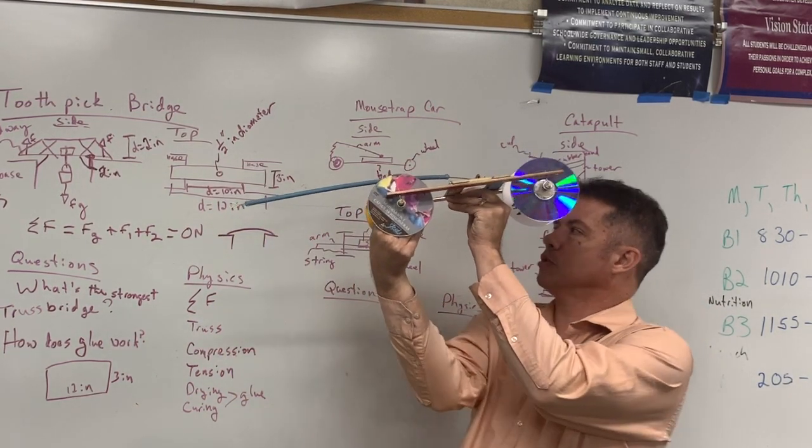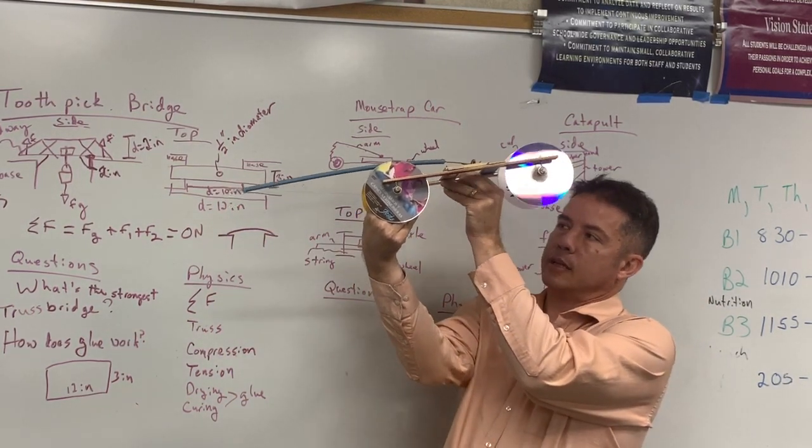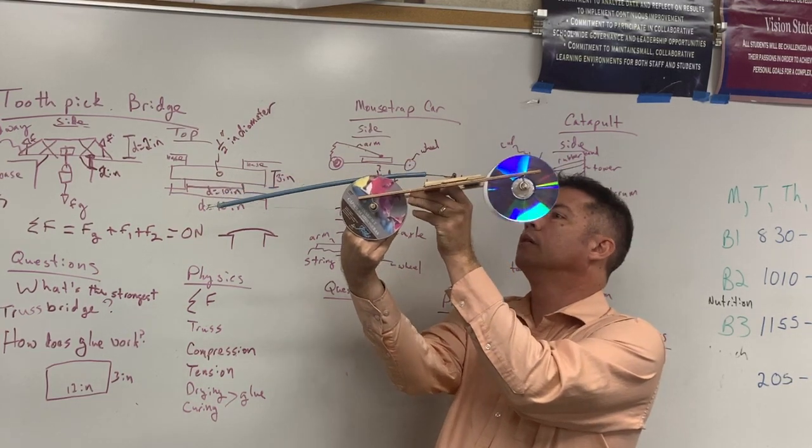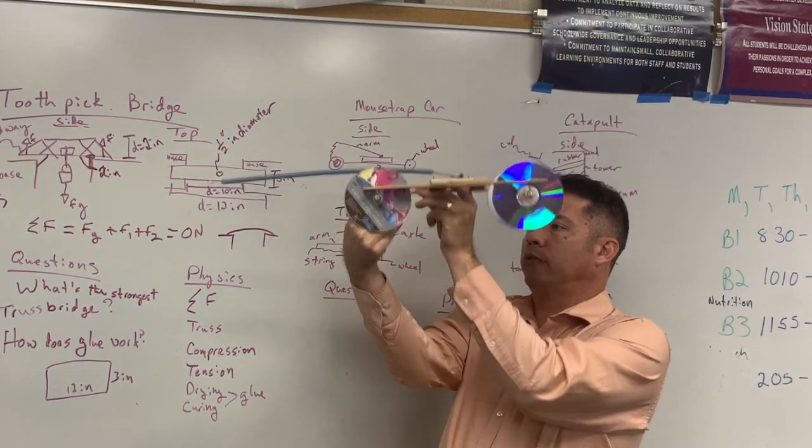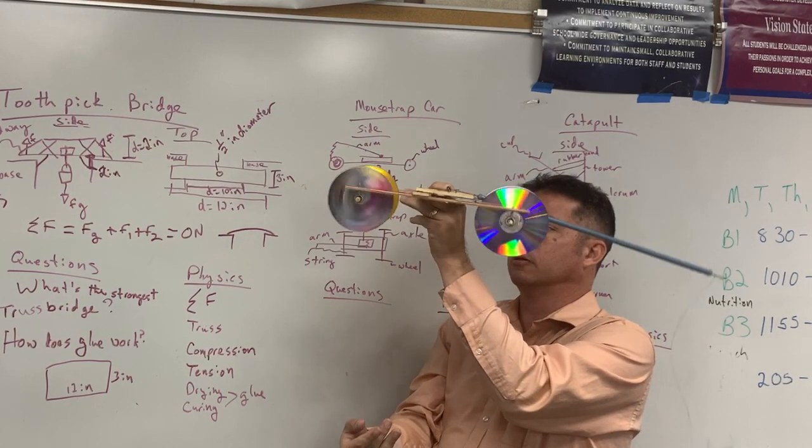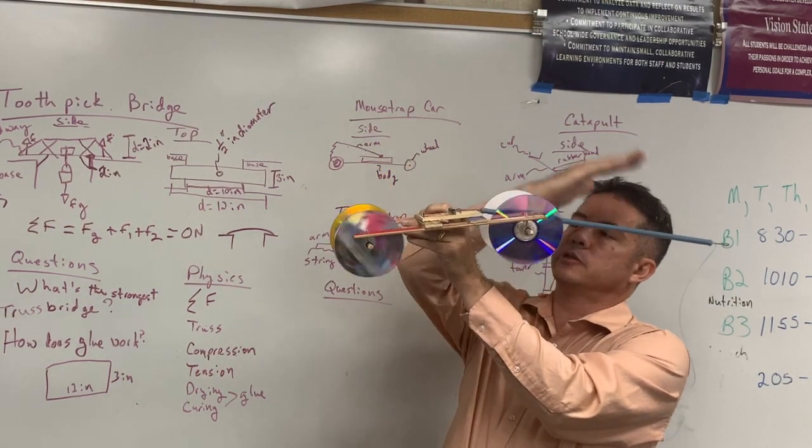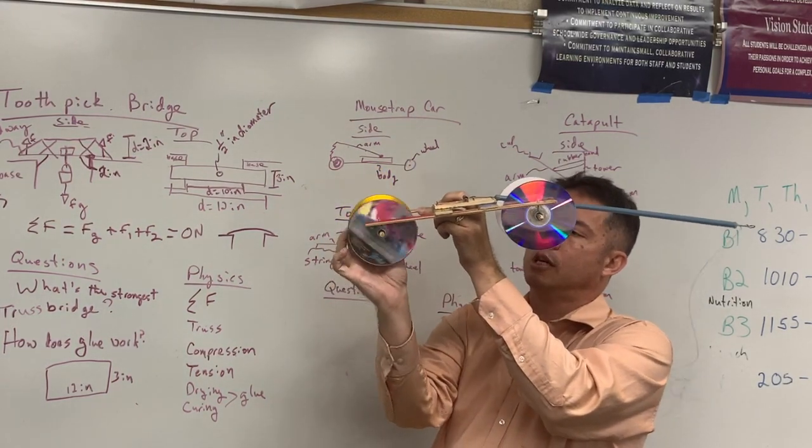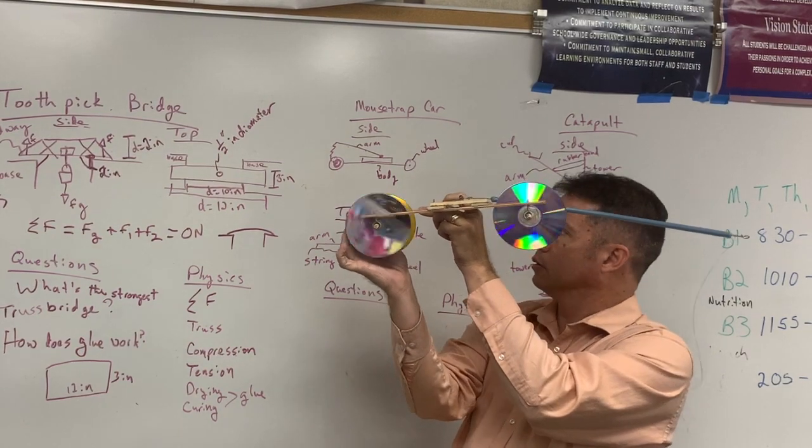So to match my picture, I've got it like this. I let go of the string. I let go of the wheel. If I set it on the ground, I let go. The mousetrap pulls the arm, and the string causes the wheel to turn.